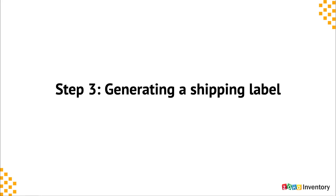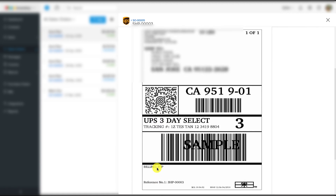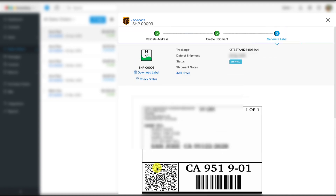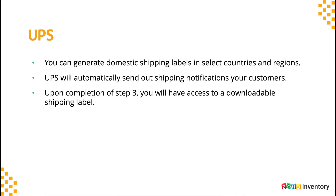Step three: generate the label. Here you will find the shipping label being generated based on whatever you have selected during the past two steps. You have a choice to either have the system send out a notification automatically to your customers or you can manually notify them. UPS will automatically keep track of the shipments and update their statuses in Zoho Inventory. You can also use UPS for domestic shipments in many countries, so this carrier is no longer limited to just US and Canada. Please feel free to integrate UPS and Zoho Inventory and try shipping goods to your customers.